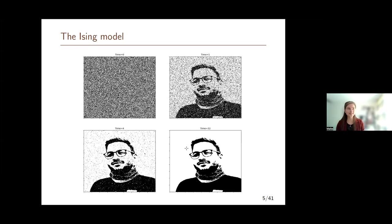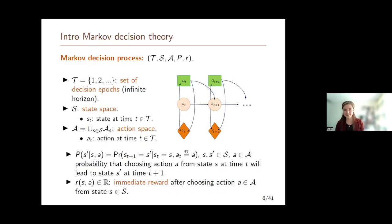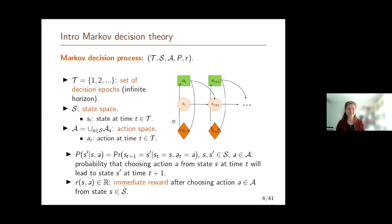So what we're interested in is settings in which the decision maker doesn't have such a strong magnetic field at his disposal — he needs to find more sophisticated ways in order to get the model to behave as he wants. This is where Markov decision theory comes into play. If you're not familiar with Markov decision theory, I'll give a very brief overview of the basics.